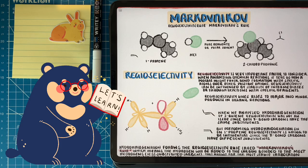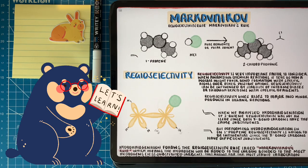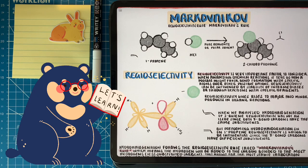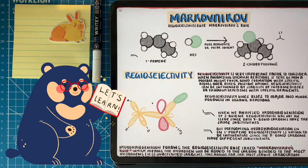We've run into a small little problem. We talked about carbocations and the things that make them more stabilized, but when those pi electrons attack the electrophilic hydrogen of the hydrogen halide, where is that hydrogen going to go? Which double bond carbon is it going to get attached to?